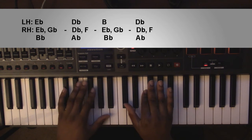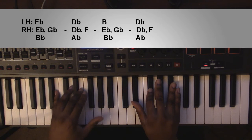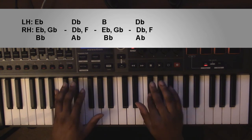From here it's going to go to a B-major 7 chord. Left hand you'll have a B, right hand you're going to have an E-flat, a G-flat, and a B-flat.